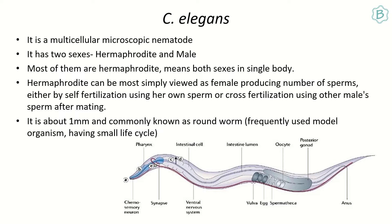C. elegans is used as a model organism because it has a small, easily manipulated life cycle. RNA interference or any genetic technique can be used to do modifications as needed. In the basic structure of C. elegans, on the ventral side there are vulva cells, which are basically egg-producing cells.